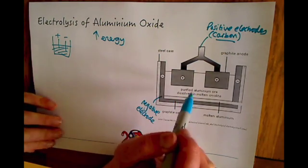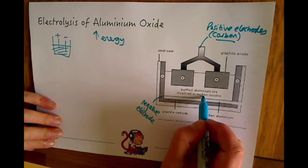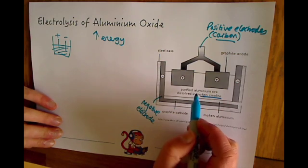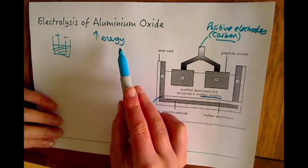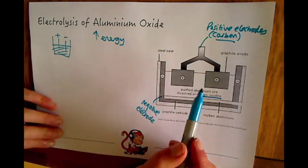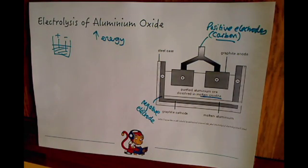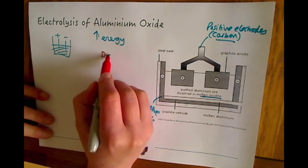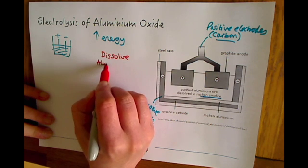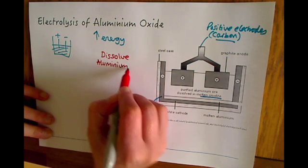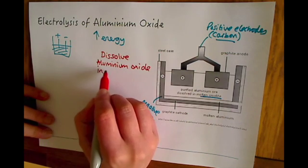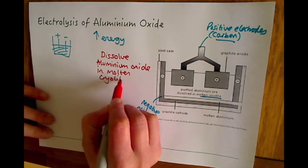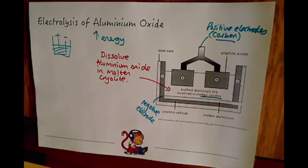Instead, to get around that, they dissolve it in something called cryolite. They'll still need to heat it up, but not to as high a temperature as you would if you were just purely making the aluminium oxide molten. So they dissolve the aluminium oxide in cryolite and then use that as the electrolyte.